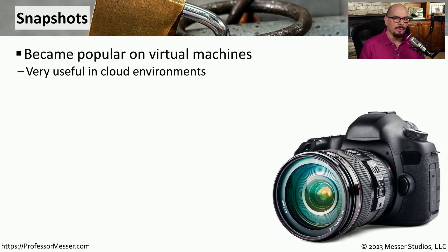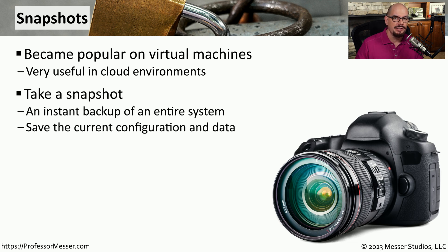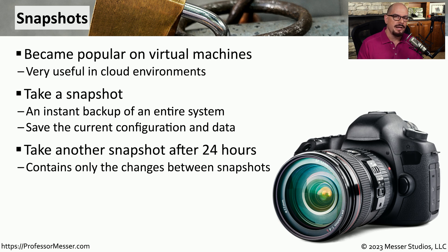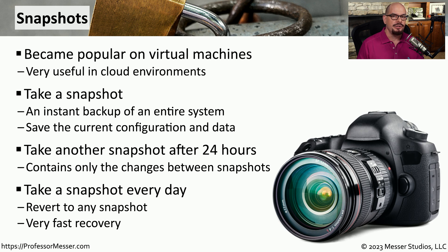Another type of backup that became very popular with virtual machines is a snapshot. A snapshot is a common backup method for virtual machines and cloud-based infrastructures, allowing a system administrator to back up an entire system with the click of one button. A copy of that virtual machine is created and set aside, so if you make changes or want to roll back, you can simply apply a previous snapshot. One strategy is to take a snapshot every 24 hours, giving you a daily update. These snapshots are similar to an incremental backup, where only the daily changes are saved, and reverting is just a few clicks away.